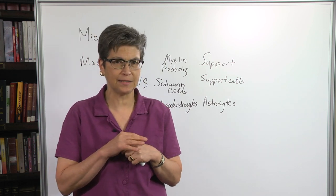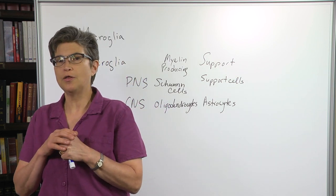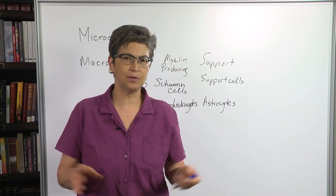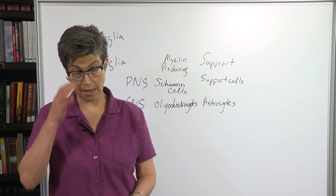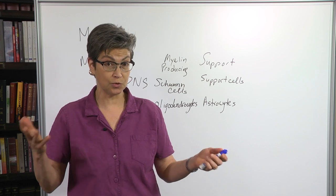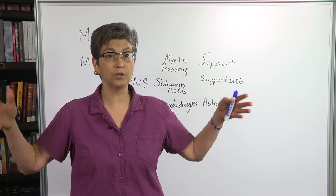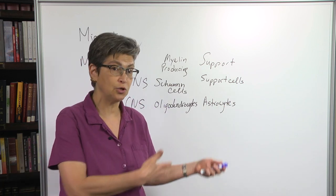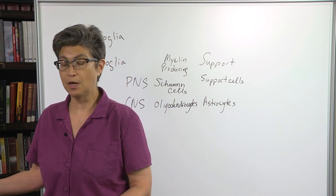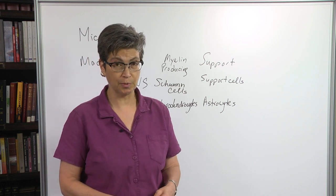There are a couple of dents in that story, though. First of all, at one time, it was thought that glia outnumbered neurons 10 to 1. That appears not to be the case. In fact, there appear to be about equal numbers, about 85 billion neurons in a human brain, 85 billion glia cells in a human brain.